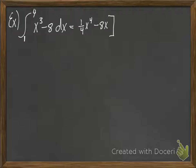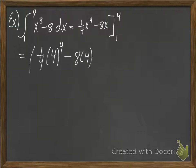And then we're going to evaluate that at those two extreme values, at 4 and at 1. So I'd go in here, evaluate it at 4. So that would be 1 fourth, 4 to the fourth, minus 8 times 4. All that's minus 1 fourth times 1 to the fourth minus 8 times 1.